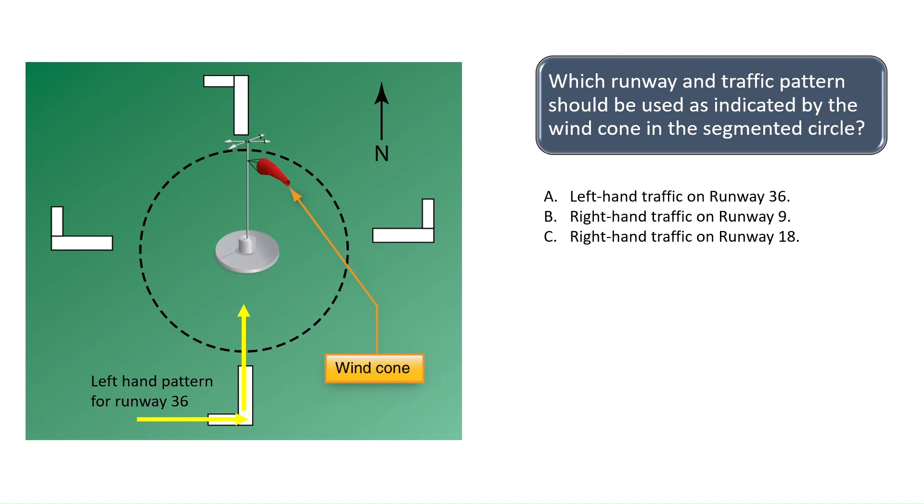Remember, runway numbers are indicated by the magnetic heading that the runway is aligned with, so since due north is 360 degrees, the runway aligned with north is 3-6. Since due east is 90 degrees, runway 9 would be pointing east. Runway 1-8 would be due south since 180 degrees is the magnetic heading for due south.